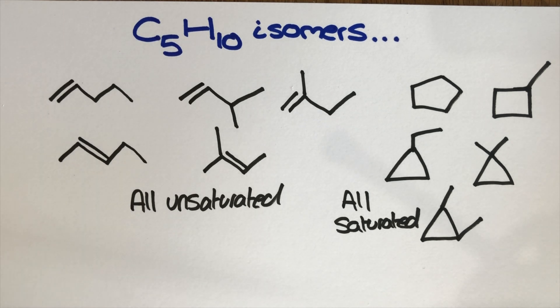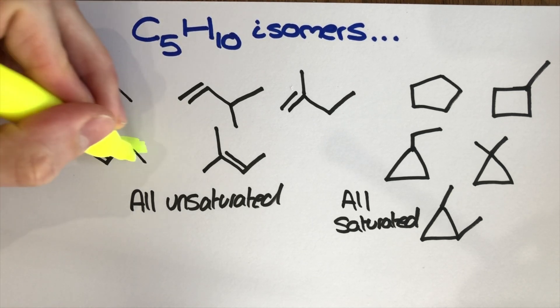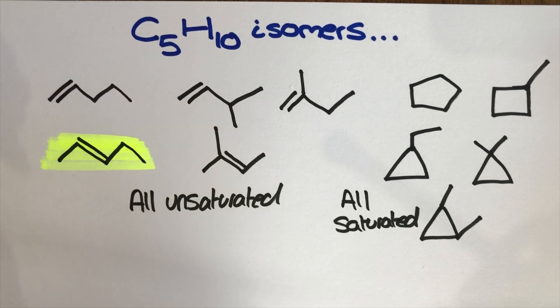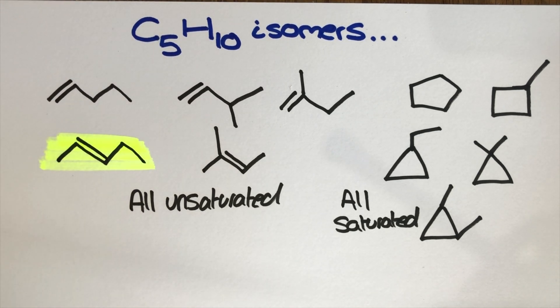Now you'll notice at the top of the screen I actually did say isomers instead of structural isomers here and that's because I've got one important thing to talk about. This. The pent-2-ene. The pent-2-ene on the screen now that I've just highlighted is the only example in this entire selection that shows E/Z and cis/trans isomerism.